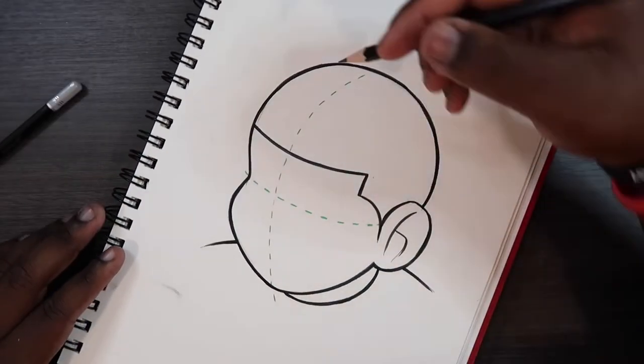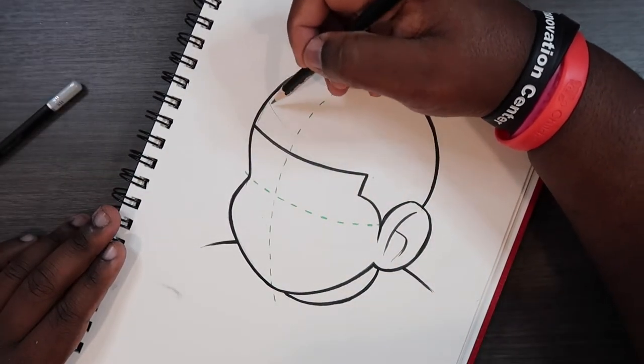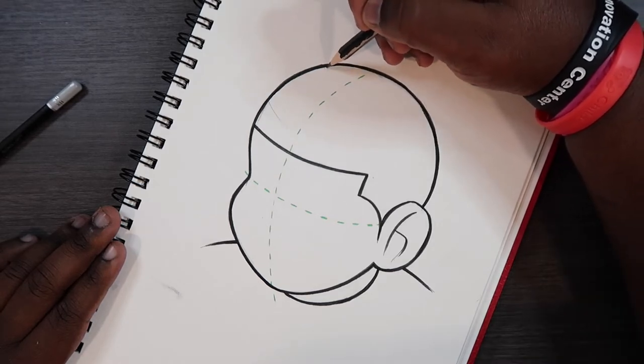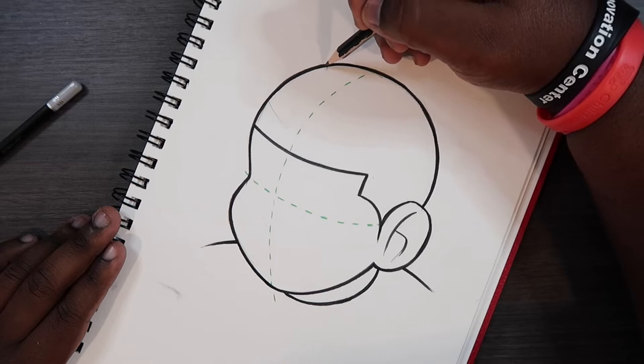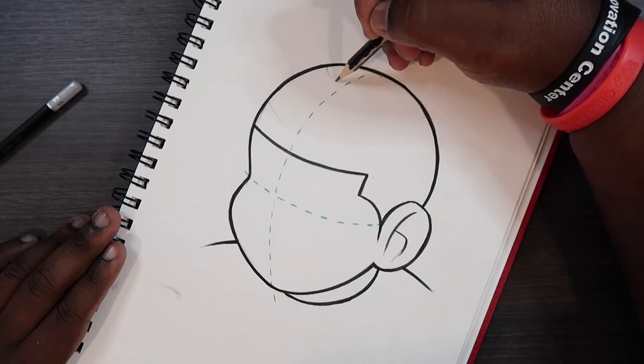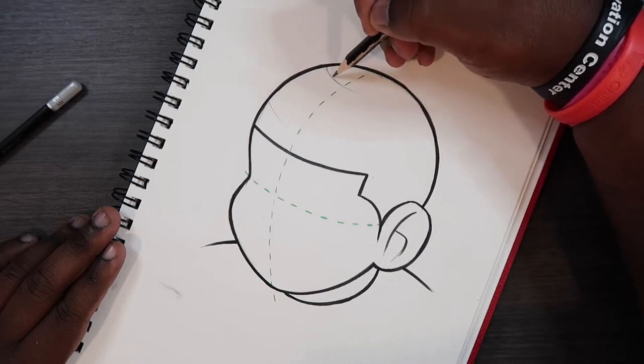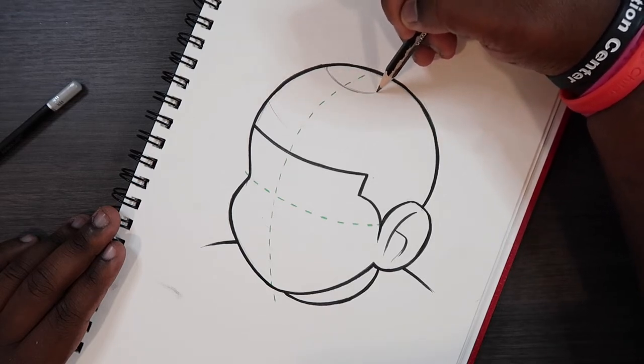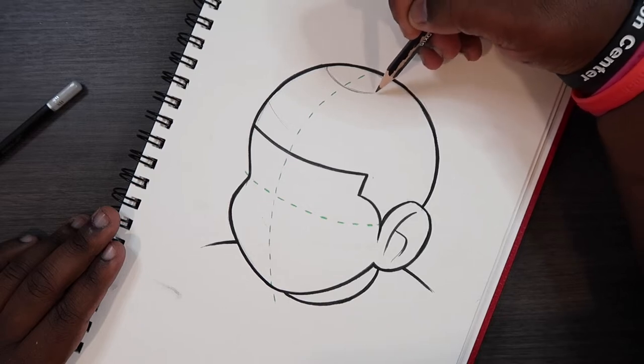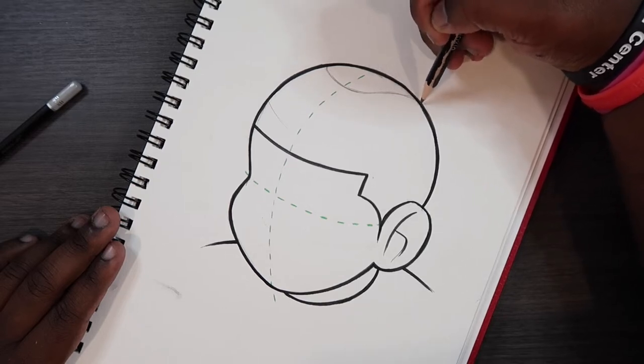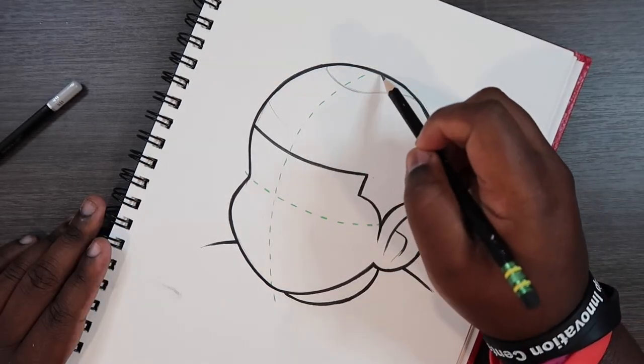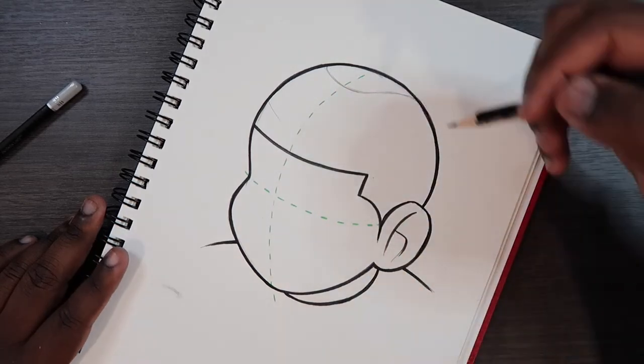So first I'm going to take my HB pencil and just draw out the lines of the waves. Now I like to have it curving off of one of these contour lines here. I'm going to make sort of like a half ellipse shape and then stop here and then come and make an opposite curve coming back to the other side of the head. And as I continue down from this area these curves will get a lot bigger.